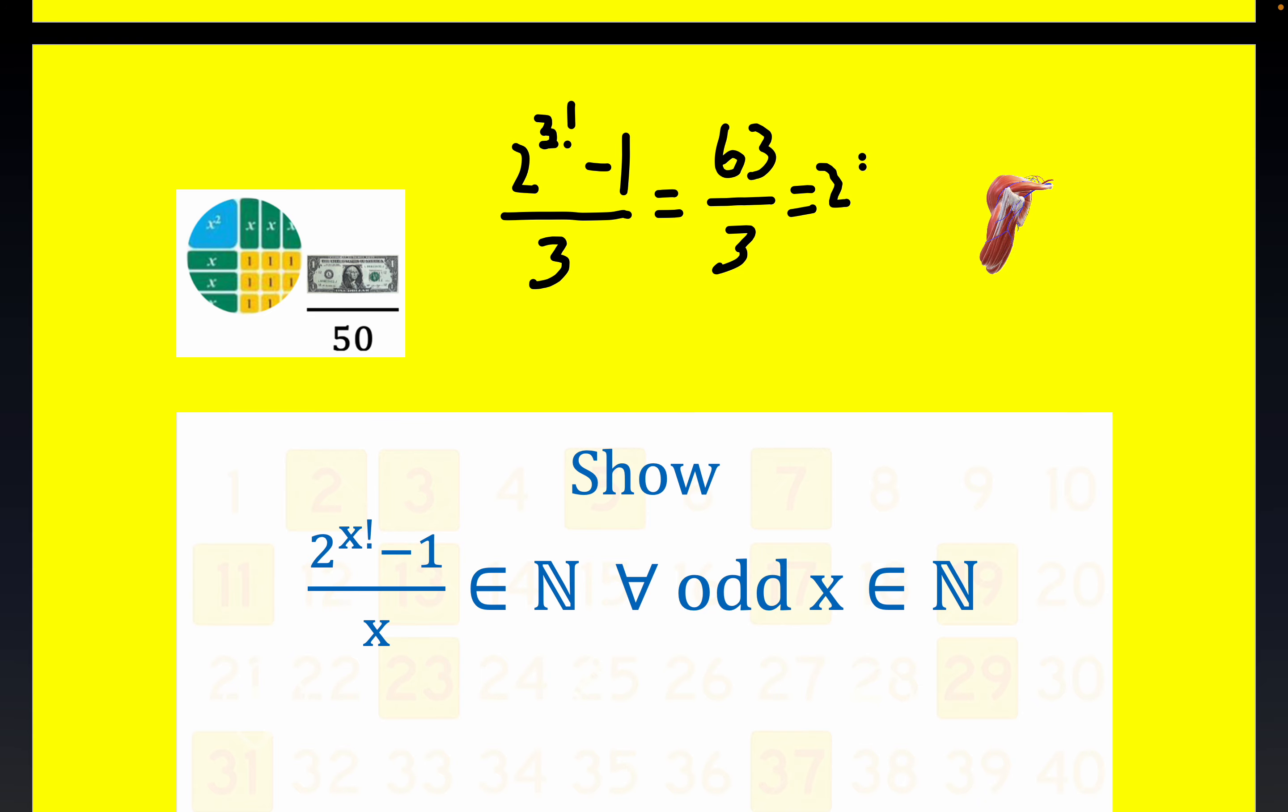Now, that's the last small number where we have much luck. So you see it's a member of the natural numbers. This is a member of N. It's a natural number. 3 factorial is 6, 2 to the 6 is 64, 64 minus 1 is 63, and 63 divided by 3 is 21.